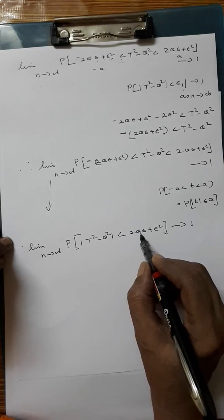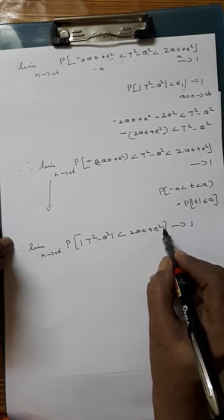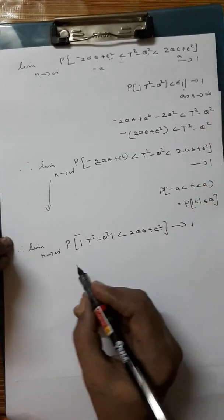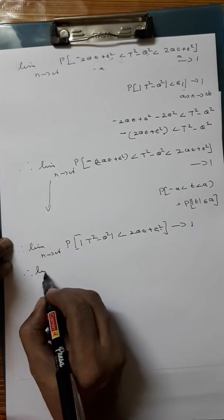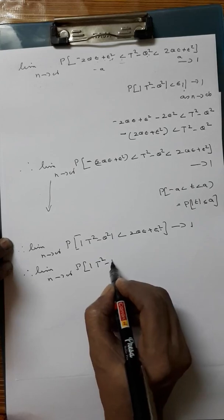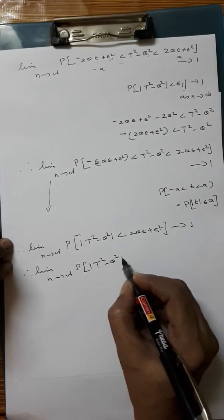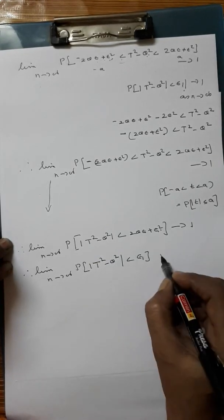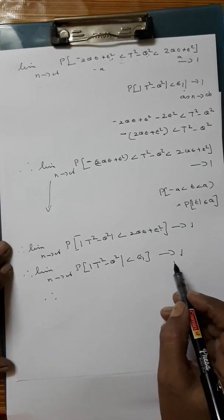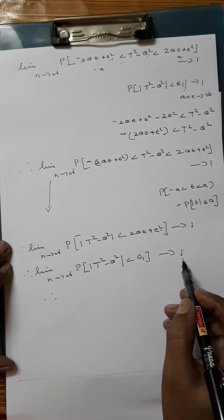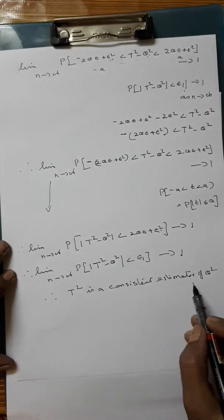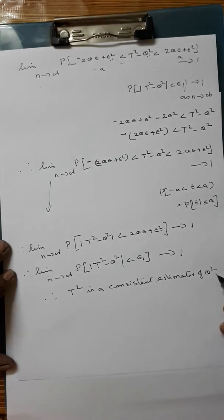This quantity 2 theta epsilon plus epsilon squared is again a small arbitrary number. Let us name it epsilon 1. Therefore, limit n tends to infinity of P of |T squared minus theta squared| less than epsilon 1 tends to 1. Therefore, this satisfies the condition for consistency, and hence T squared is a consistent estimator of theta squared.